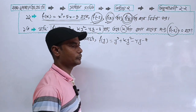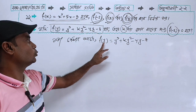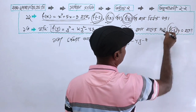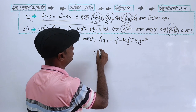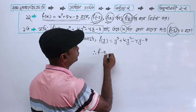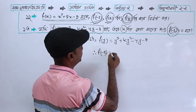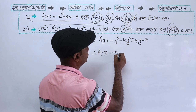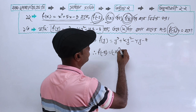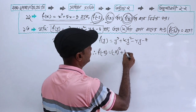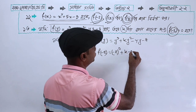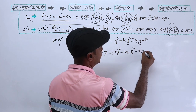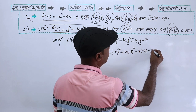Minus 2 is equal to 0, so we substitute y equals minus 2 into the function. k into y, where y equals minus 2, plus 2 squared minus 4 times y equals minus 2 minus 8.